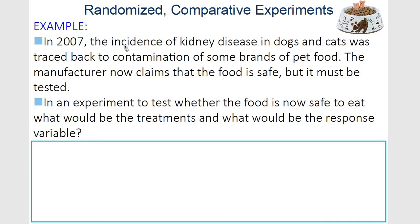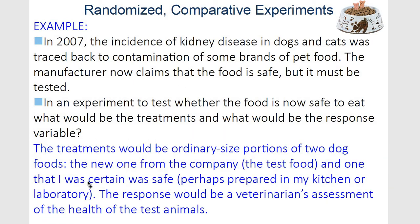Back to our kidney disease example — now they're saying the new food is safe. How do we test it? I would give some dogs the new food and some dogs what you'd deem healthy or safe food — either something I'd prepare or something from the lab. The response variable would be the health of the animal, obviously assessed by a veterinarian. Make sure it's clear how you're getting the information.